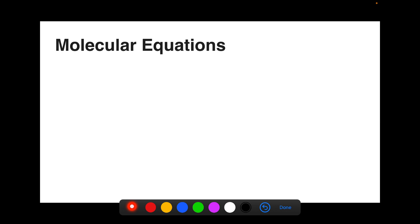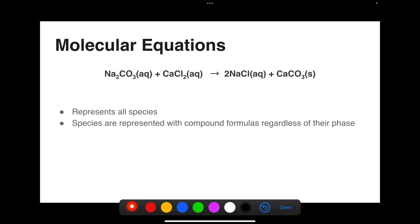Now let's look at molecular equations. These are the types of equations you've been looking at all along. In this case, we represent all species involved in the reaction, and the species are represented with their compound formulas regardless of their phases. This will mean more to you when we look at the alternatives. But again, we're showing conservation of mass and rearrangement of atoms, and we've used coefficients to balance the equation.